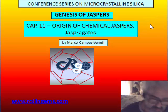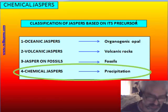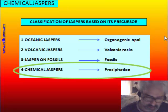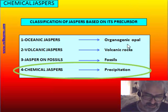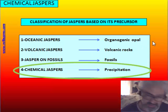This is the last chapter about jasper and we will talk about a special group of material called jasperagate, because it is a mix of jasper and agate. We are always in the group of chemical jasper — jasper produced by precipitation in a cavity — and the difference with the other three groups of jasper is that those are produced by transformation of previous material: as opal in oceanic jasper, as volcanic glass in volcanic jasper, and on organic material like wood, bones, or fossils.